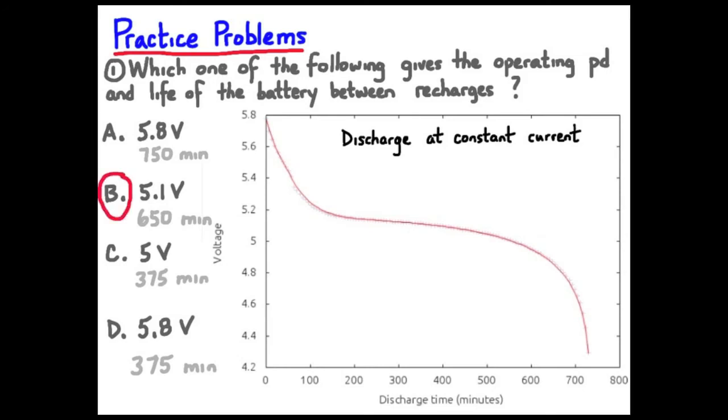We can see the potential difference really trails off at around 650 minutes. And at the half-life, so half of that, we're at around 5, 5.1 volts. So our answer is B.